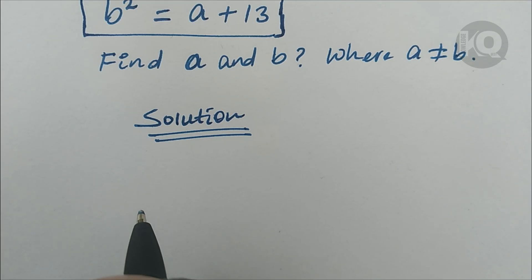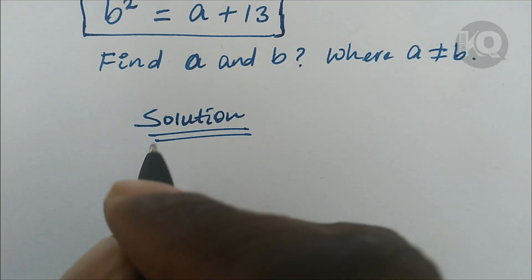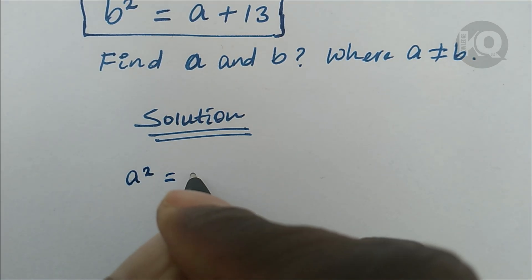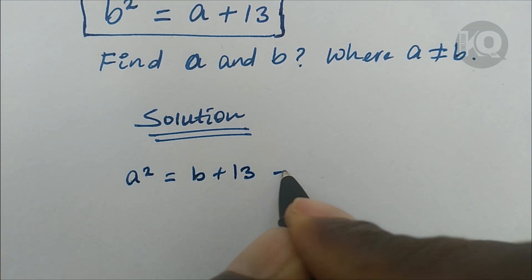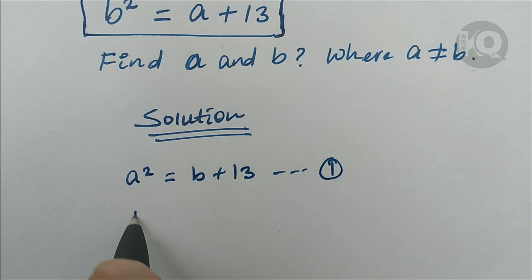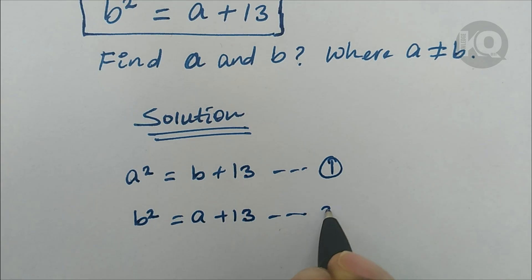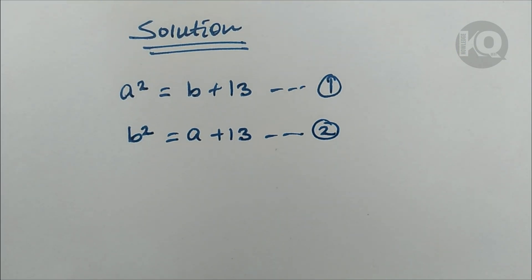In the first step, let's assign each equation a label. So a squared equals b plus 13 is equation one, and b squared equals a plus 13 is equation two.